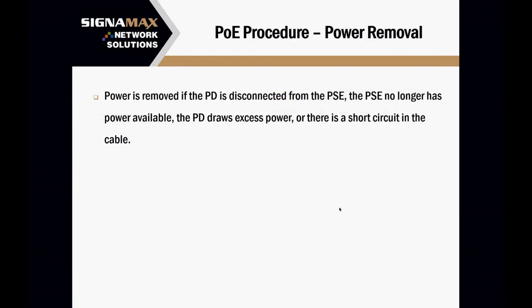The last stage in the process is power removal. The PSE constantly needs to monitor the PD — checking the MPS and that it has the right resistance. If there is no longer a PD connected, it will disconnect the power. It will also disconnect if there's a short circuit, or if the PD draws excess power causing an overload.